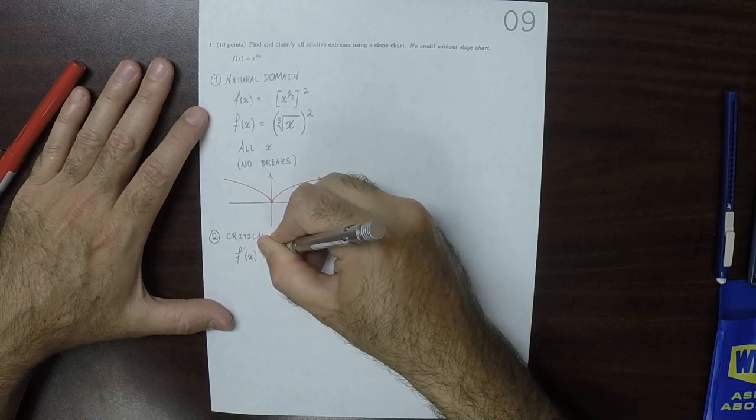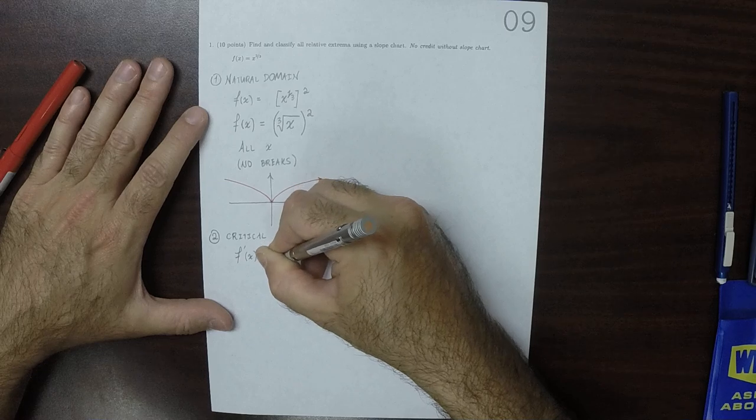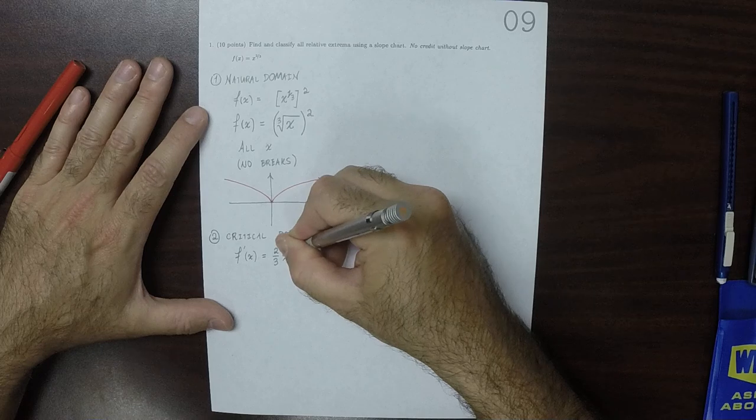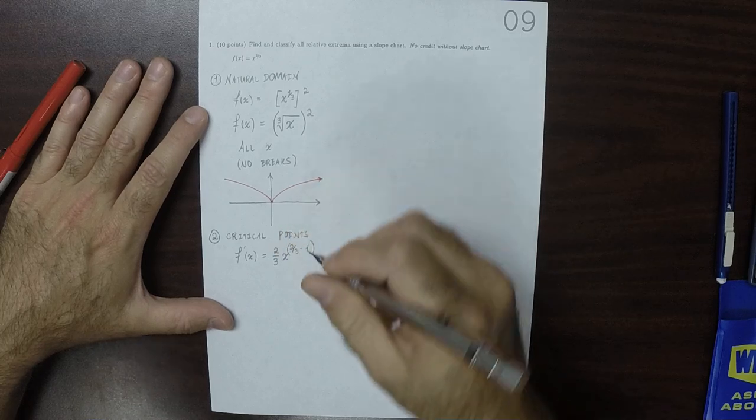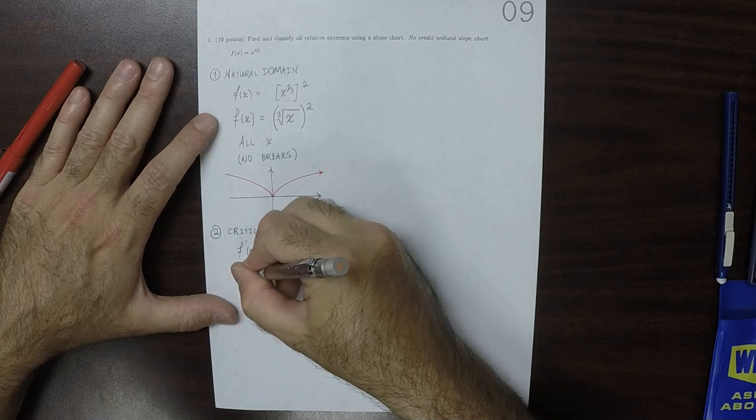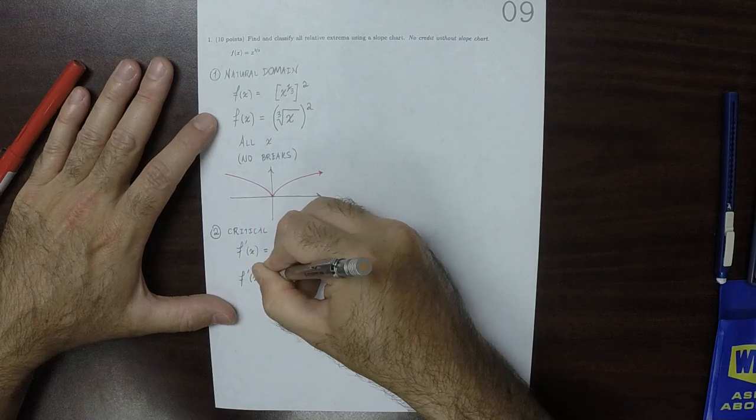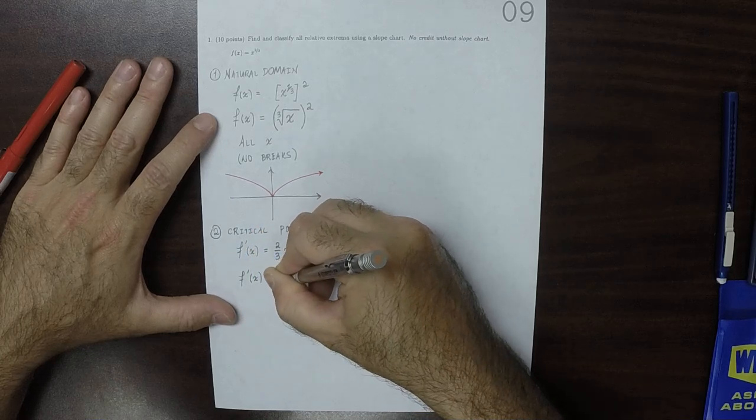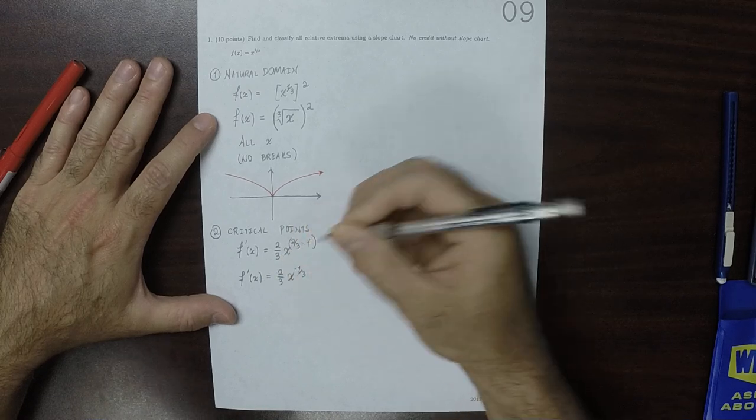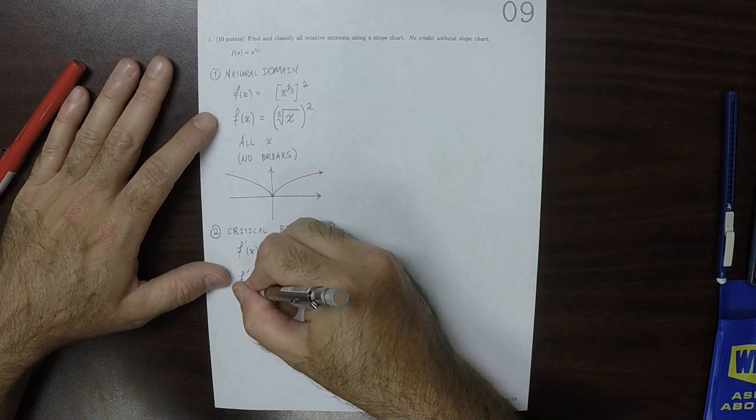So the derivative is two-thirds x to exponent two-thirds minus one. Well, two-thirds minus one is negative one-third.